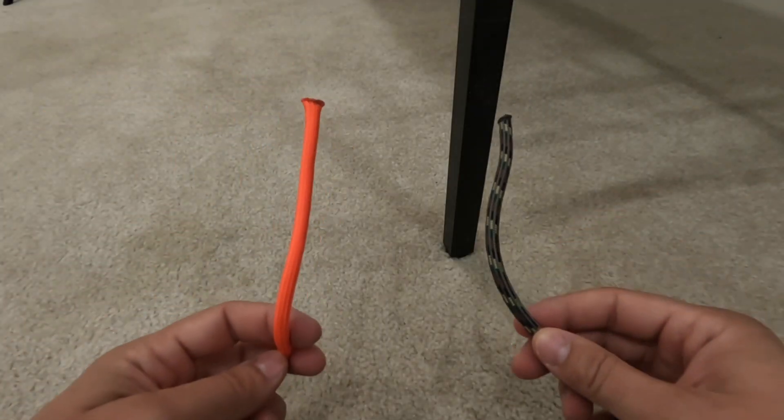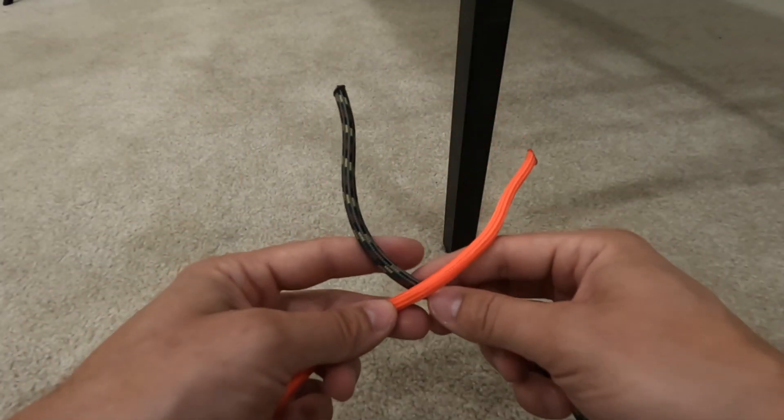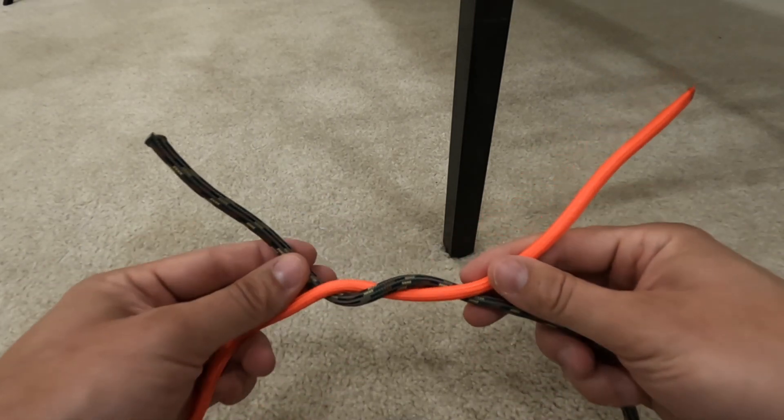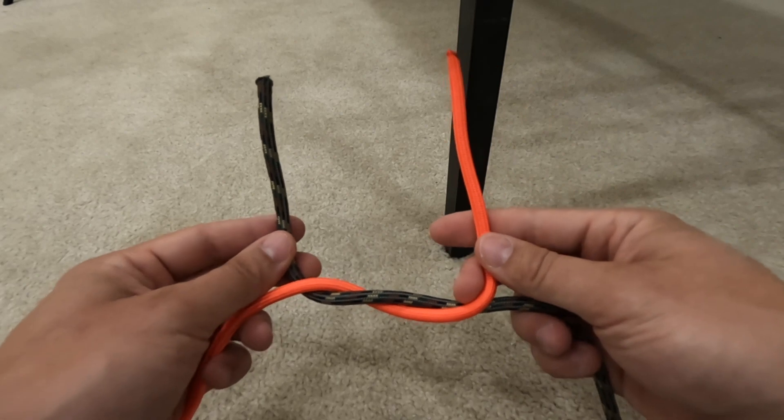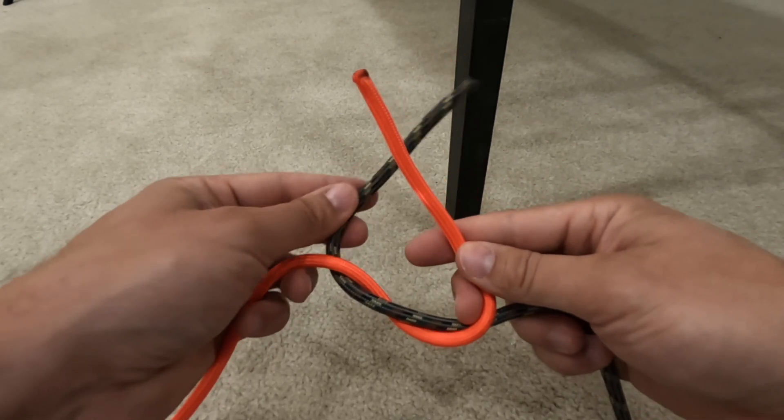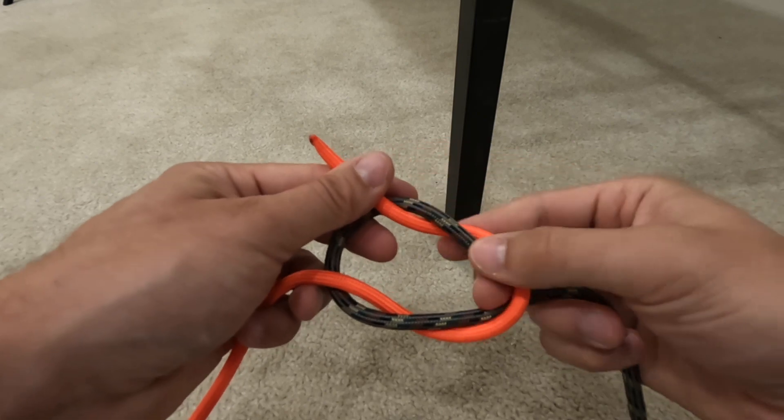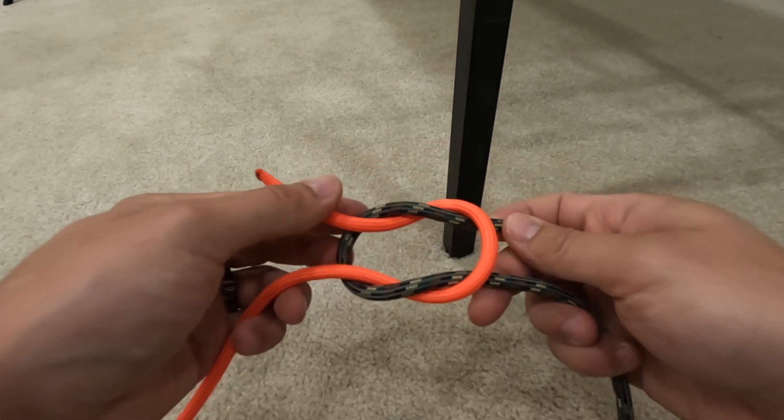Number one we have the square knot or the reef knot. This knot goes back at least 4,000 years so it's been around the block once or twice. The knot is great for securing two lines of similar size around an object, making it a binding knot. Some uses for this knot are tying a makeshift bandage around a body part or securing one or more objects together.